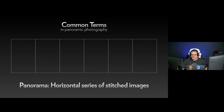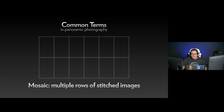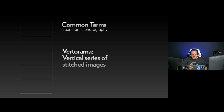So let's cover some common terms first. A panorama is a horizontal series of stitched images — that means you take multiple images and use software to stitch them together. A mosaic is when you take many pictures but in multiple rows: you can take eight across, then go down or up a little bit and take another row across, doing this multiple times — two rows, three rows, four rows — then you stitch all of them together. And then there's a vertorama, which is just a panorama on its side: it goes up instead of side to side.